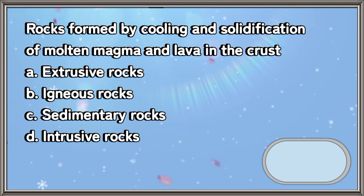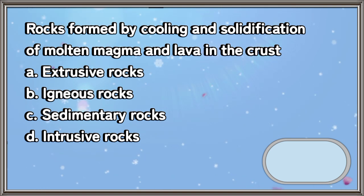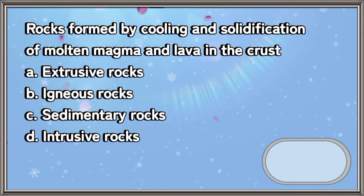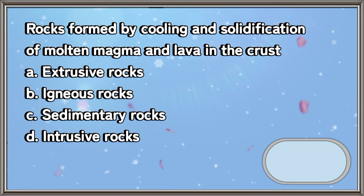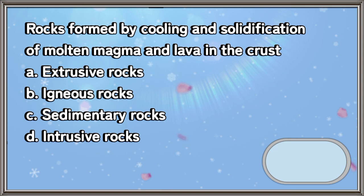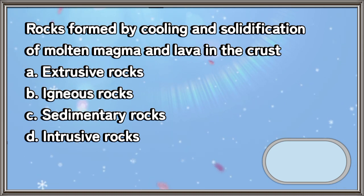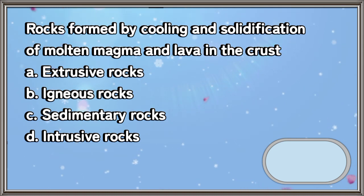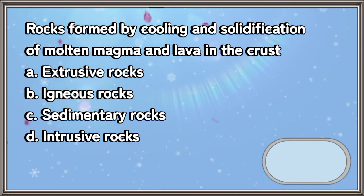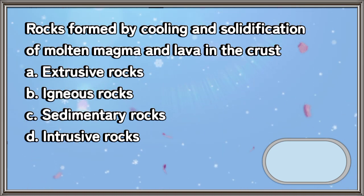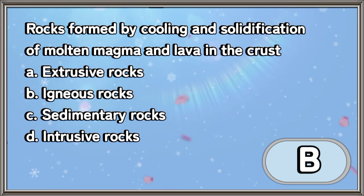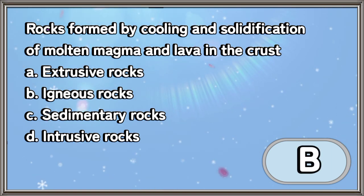Rocks formed by cooling and solidification of molten magma and lava in the crust: A. Extrusive rocks, B. Igneous rocks, C. Sedimentary rocks, D. Intrusive rocks. The answer is letter B.